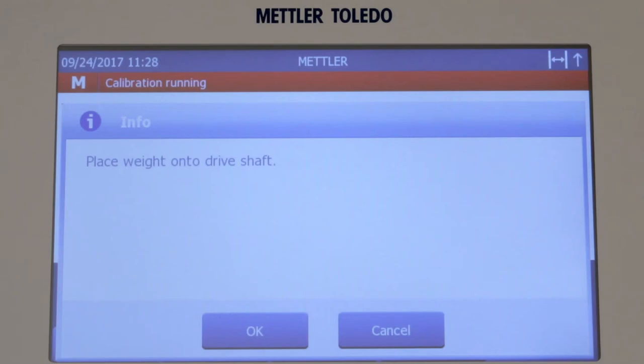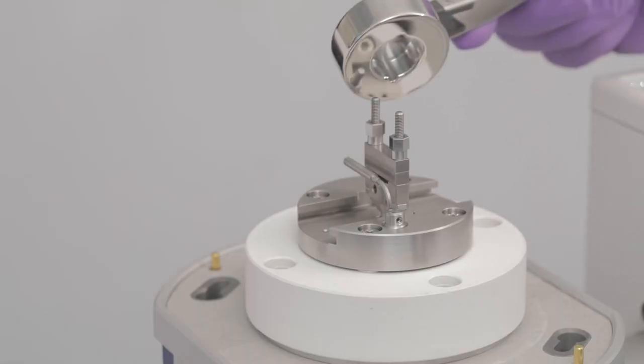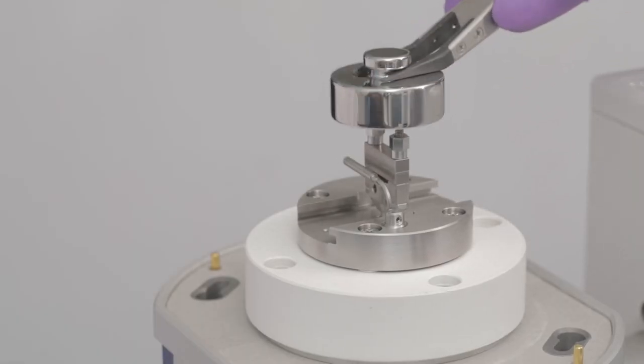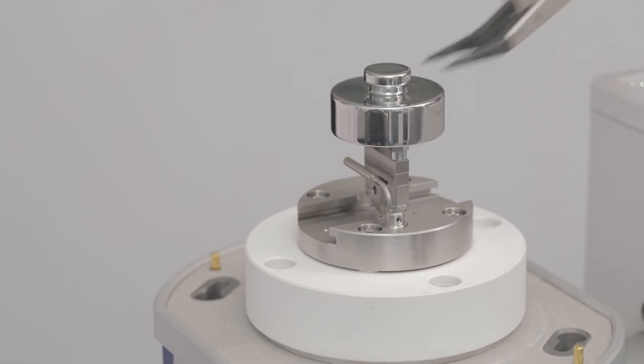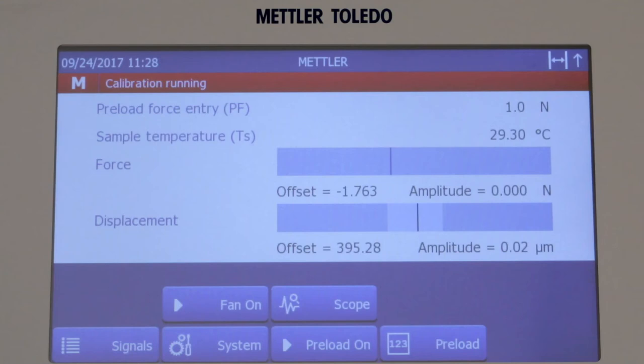Fit the reference weight on the driveshaft. The two support pillars fit into the two recesses at the underside of the reference weight. Tap OK to confirm the proper placement of the reference weight. Both the static and dynamic force factor parameters are now calculated.